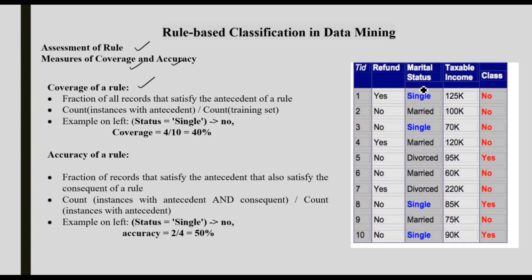We have a dataset with attributes: refund (yes/no), marital status, taxable income, and class. Take the rule: if status = single, then class = no. The antecedent is status = single. Out of 10 records, 4 are single, so the coverage is 4/10 = 40%.